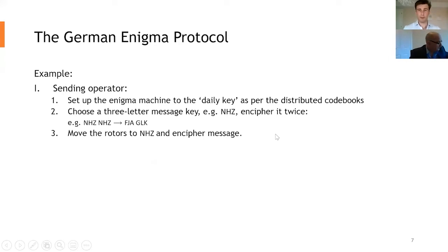So to run through the example, as a sending operator, the operator sets the Enigma machine to the daily key. So that would say, okay, we're going to have rotors in order, say 1, 3, 2, starting settings A, B, C, etc, etc. The operator would then choose a three-letter message key of his own choosing. So take, for example, a random example, for instance, N, H, Z.